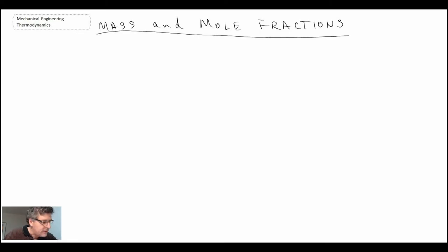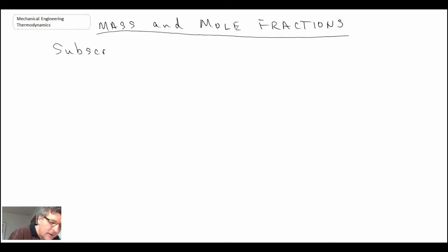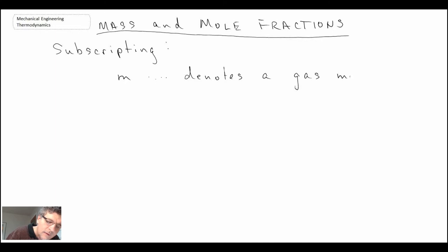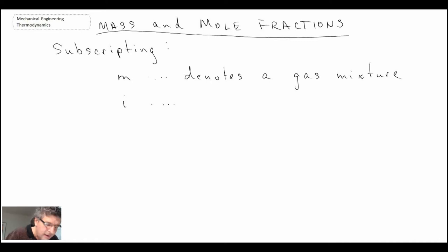When looking at gas mixtures, we quite often use mass and mole fractions, so I will introduce those now along with a certain form of subscripting so that we're consistent. Whenever you see a subscript M, that will denote the mixture. Whenever you see a subscript i, that will denote one of the individual components in that mixture.